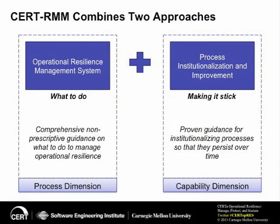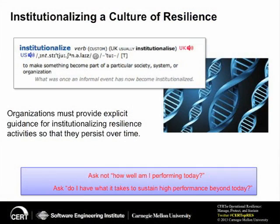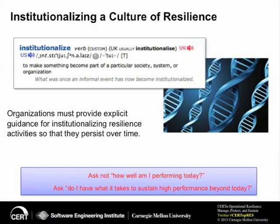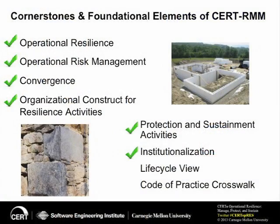This idea of institutionalization is a combination of what are the good things that you should be doing and how do you make those sticky — how do you institutionalize or ensure that these things will continue to happen in a coordinated way in the organization? There's a process dimension and a capability dimension to this. It's about making something become part of the fabric of the particular organization and ensuring that these activities persist over time. The quote at the bottom sums this up nicely: instead of asking 'how well am I doing today,' the appropriate question here is, 'am I doing what it takes to sustain this high performance going forward?'